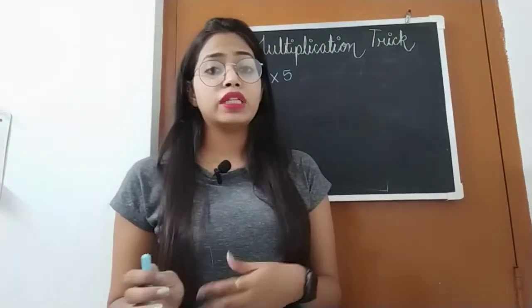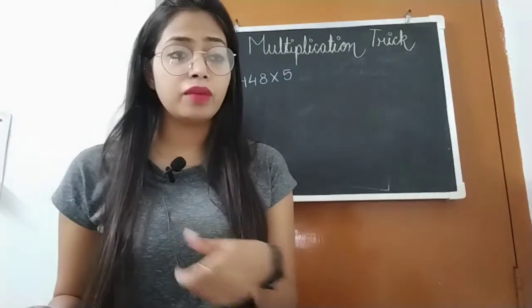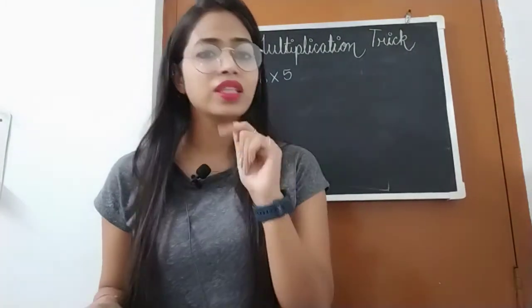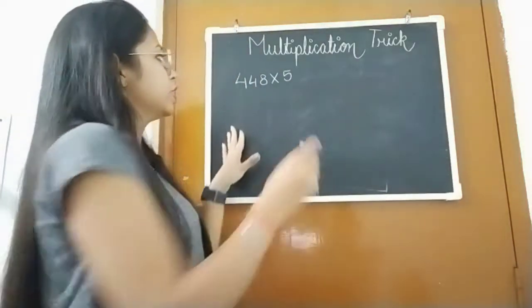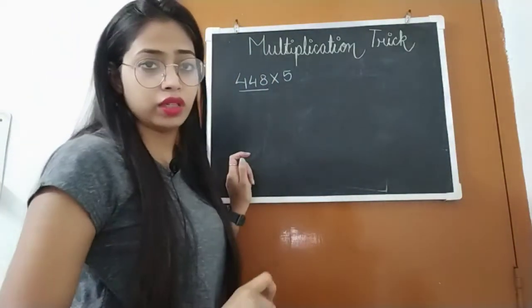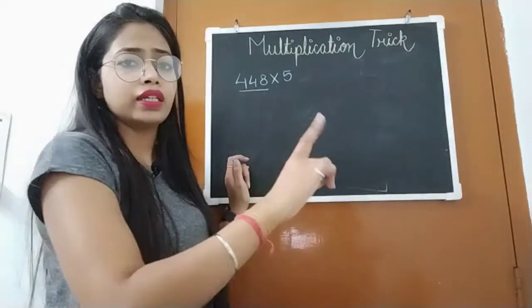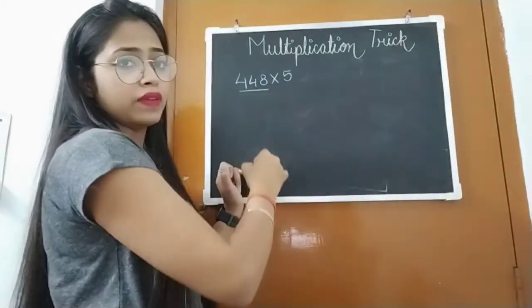Now we'll see how to multiply it quickly so we don't need to spend more time. What do we do? We divide our number by 2, digit by digit.